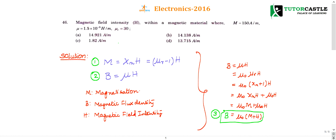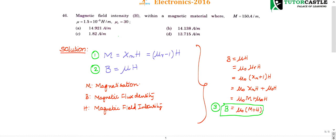Question number 46: Magnetic field intensity H within a magnetic material where M equals 150 ampere per meter, μ equals 1.5 × 10⁻⁵ henry per meter, and relative permeability is 30. Now he is asking what is the value of H. Before we proceed to this question, many people...